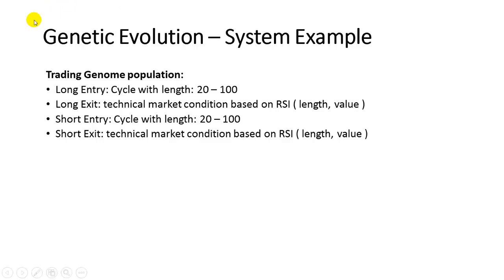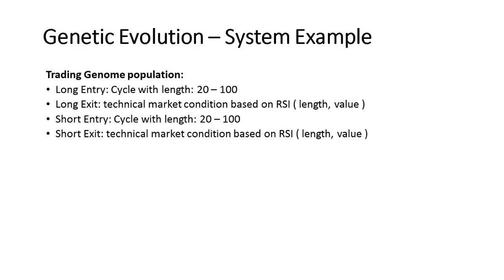We close our long trades based on the technical market condition, meaning the RSI length setting and the crossover value are also unknown and will be detected by the genetic algorithm — same for the short signal. All these values will be fed into a genome with chromosomes and genes, and the genes will be mutated based on the values and the range we set.